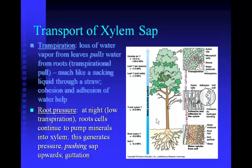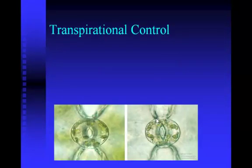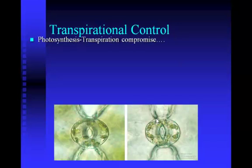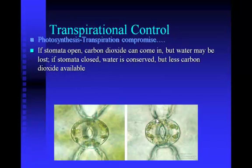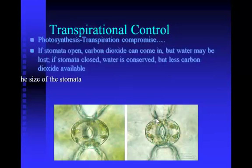Transpirational control depends on something called the photosynthesis-transpiration compromise. If the stomata are open, carbon dioxide can come in to supply photosynthesis, but water can be lost. If the stomata are closed, water is conserved, but there's less carbon dioxide available for the plant. So plants are constantly making a compromise between the needs for photosynthesis and the needs to conserve water. This is done through the action of abscisic acid — which we talked about in the plant hormone video — and the guard cells.